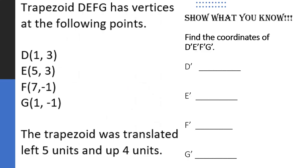Let's see if you can show what you know. Trapezoid DEFG has vertices at the following points. The trapezoid was translated 5 units left and up 4 units. Left is an x value and left is negative. Up four units — up and down is a y value, and up is positive. So I'm going to take each x value and add -5, and take each y value and add 4.